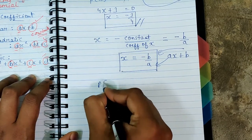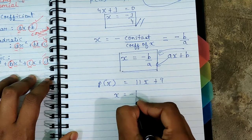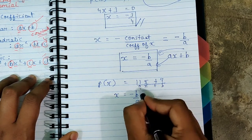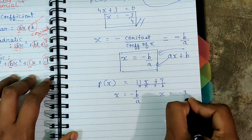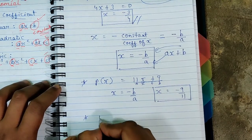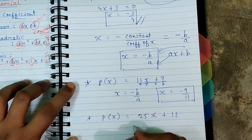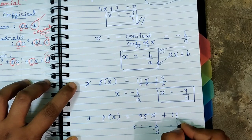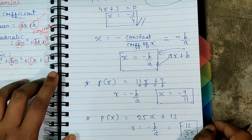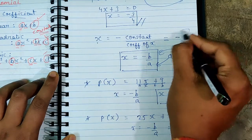Let us do a simple example. Suppose we have p(x) = 11x + 9. Comparing with general form ax + b: a = 11, b = 9. So zero = -b/a = -9/11. One more example: p(x) = 25x + 12. Here b = 12, a = 25, so zero = -12/25. This is how we can easily find the zero of a linear polynomial using x = -b/a.